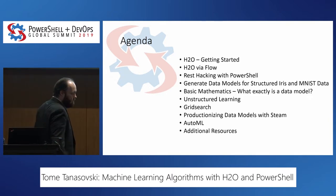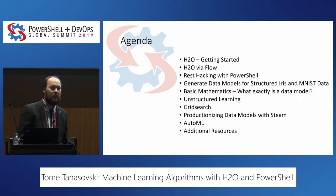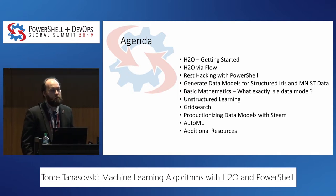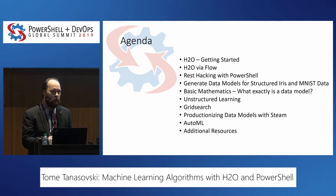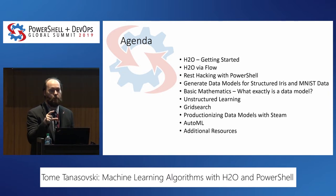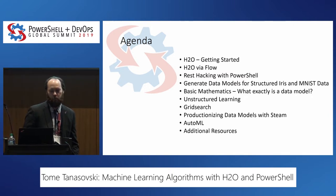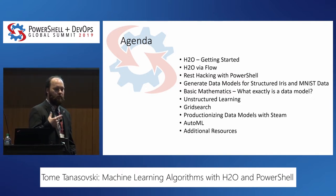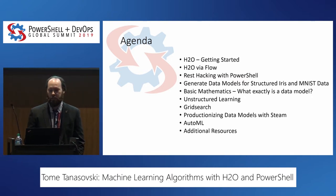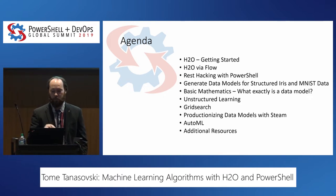As far as what we're going to cover: we're going to start with H2O, show how to download it, spin it up, access it, and talk about the user interface. We'll train our first data model using H2O via Flow, then look at REST hacking to show how you translate from the web UI into PowerShell. We'll then generate data models for a pair of open data sets — the Iris data, which predicts flower type based on dimensions, and the MNIST data, which is handwriting recognition for digits.